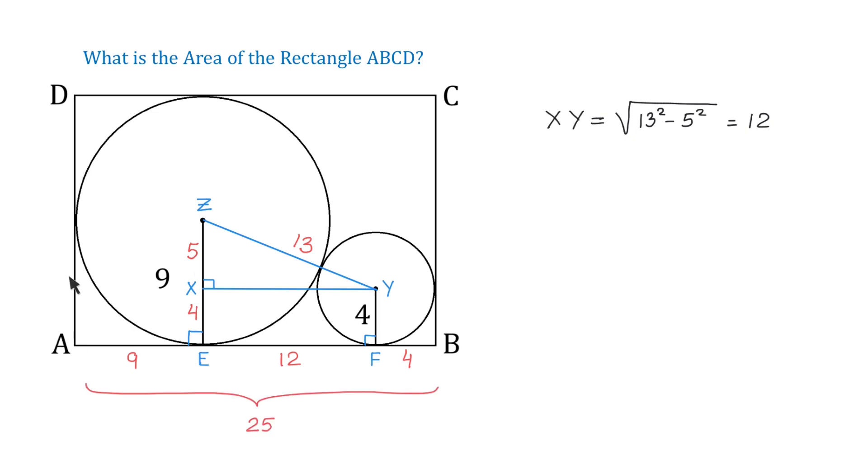Now, side AD equals 18, because this is the same as the diameter of the large circle. And now, once we have these two sides, to find the area of the rectangle, we just need to multiply them. So, the area equals 25 times 18,